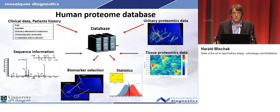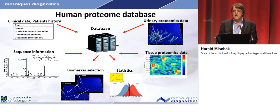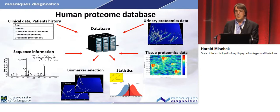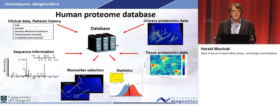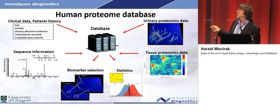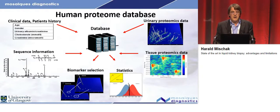This can be done by assessing the proteome. Since patients are quite different, we need a large database — plenty of proteome data from the urine, but also from tissue to link the changes observed in urine with the tissue. We need the clinical and demographic data of the patient, and sequence information to know which peaks correspond to which peptide. This enables us to perform statistics and identify biomarkers that would enable liquid biopsy.